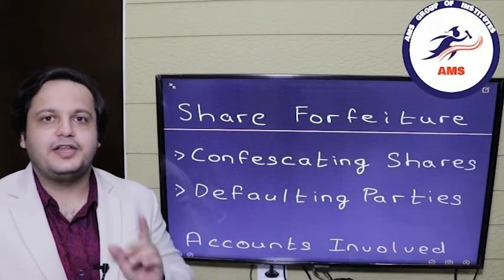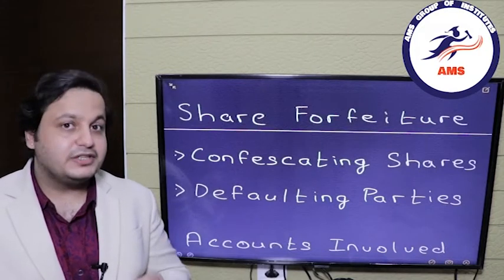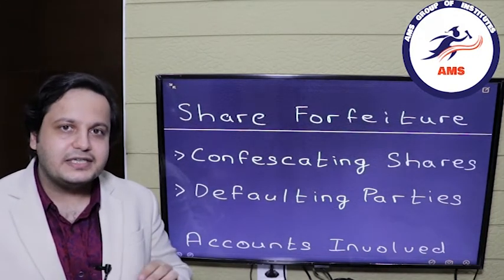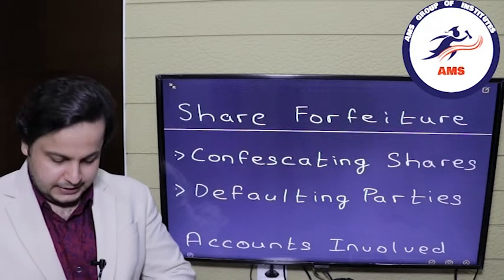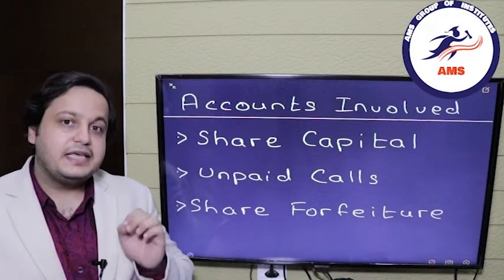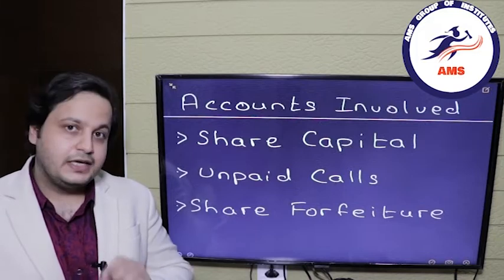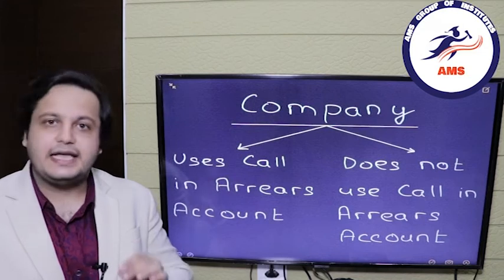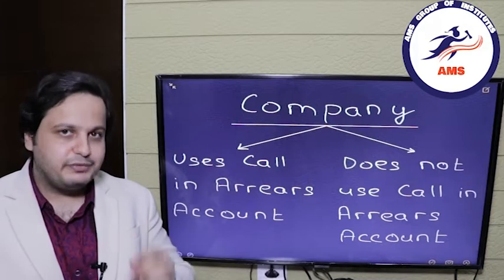Before we move forward with Accounting for Forfeiture part number 4, we will do a quick recap. What is Share Forfeiture? It is confiscating the shares of those defaulting parties who have not paid the amount — that is the calls or the allotment money. The accounts involved are share capital, the unpaid calls, and the Share Forfeiture account. Since this is part 4, we will be using the method in which the company does not use the Call in Arrears account.